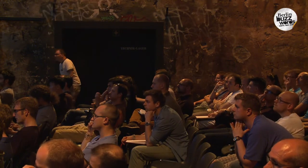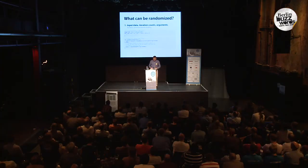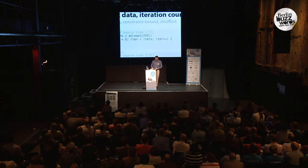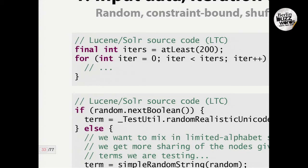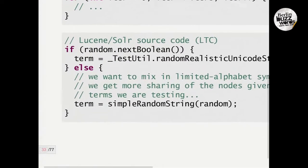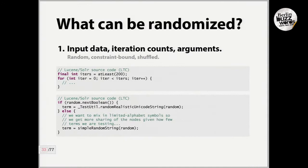If you have other arguments that are possibly constrained but from a range of values, randomize them and run the tests. Here we have some examples from Lucene — the iteration counts, we pick them at random. If there is something that can run many times, we pick at random the number of times it is invoked. The same goes with the parameters — we pick random strings, sometimes simple strings, sometimes longer strings.